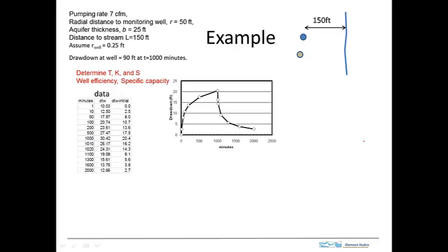Okay, let's try an example analysis of a pumping test. Here's some data for the pumping test up in the upper left hand corner. The pumping rate is 7 cubic feet per minute. The data will be measured from a monitoring well at a radial distance of 50 feet, aquifer thickness, the distance to a stream.